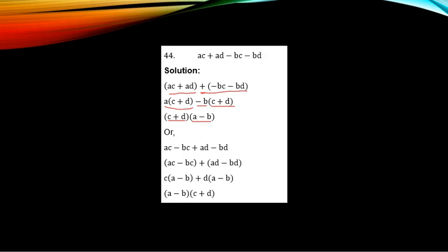Alternatively, group as (AC minus BC) plus (AD minus BD). From the first group, C is common; factoring out C gives (A minus B). From the second group, D is common; factoring out D also gives (A minus B). Since (A minus B) is common, factoring it out leaves (C plus D), giving (A minus B)(C plus D). Both answers are the same — the difference is only the position of the brackets.